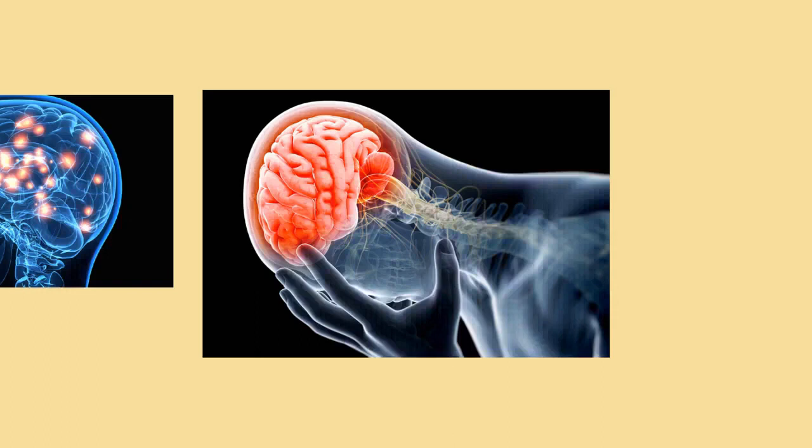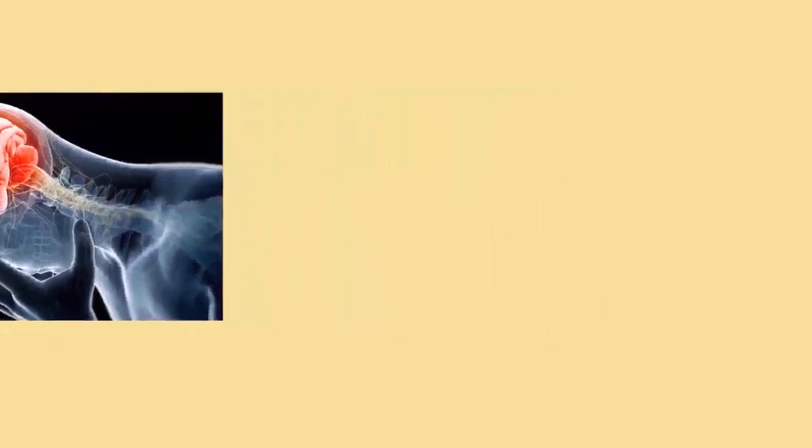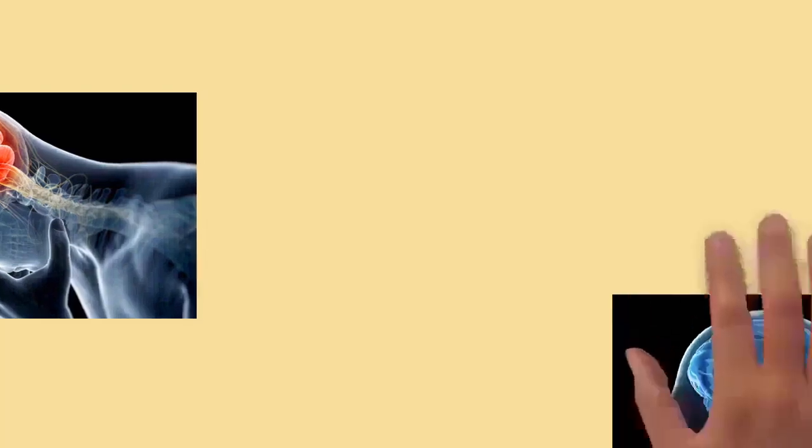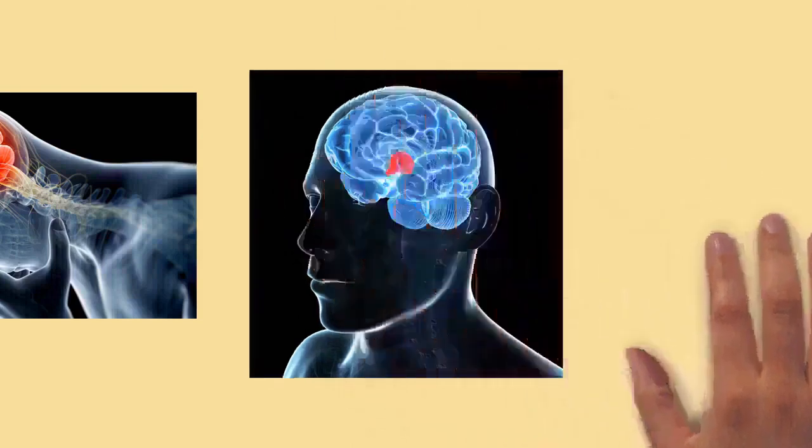There are, however, a few areas where new neurons continue to be generated throughout life. The two areas for which adult neurogenesis is well established are the olfactory bulb, which is involved in the sense of smell, and the dentate gyrus of the hippocampus, where there is evidence that the new neurons play a role in storing newly acquired memories.